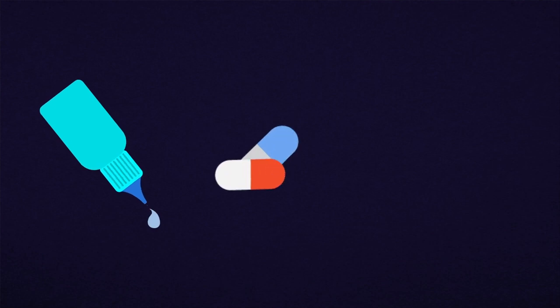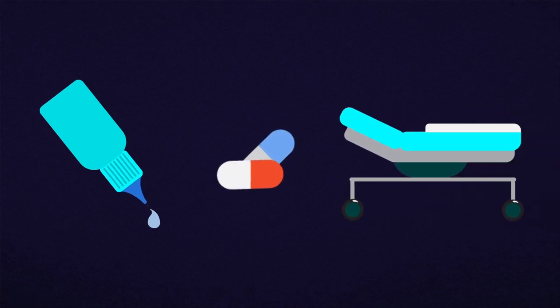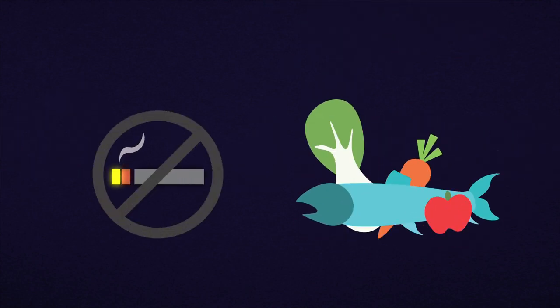Besides vision correction like glasses and contact lenses, you may also be prescribed eye drops, medication or surgery to treat certain eye diseases. You can also find out the best lifestyle and diet to keep your eyes healthy.